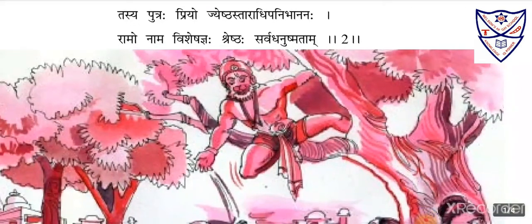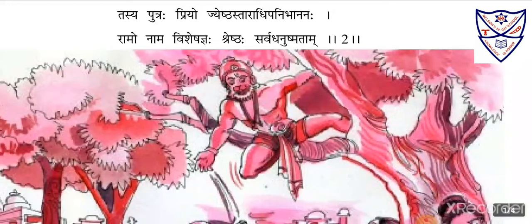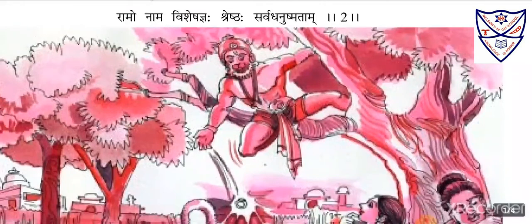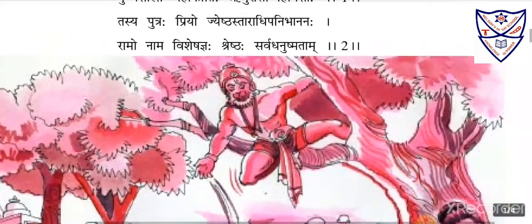His eldest son Rama, who is very close to his father Raja Dashrat — he is the best among all the archers. He is a very great person by his nature and behavior. Rama, who is very dear to Dashrat, is the best among all the archers and has excellent knowledge. Visheshagjna means he has excellent knowledge in all things. Shreshtha Sarva Dhanushmatam means he is the best archer among everyone.